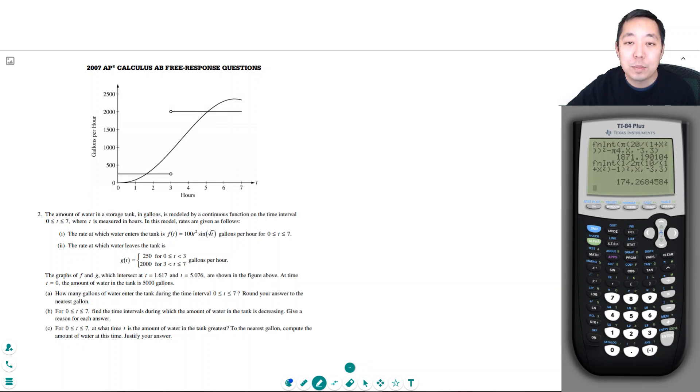Hey guys, this is Alan with Bothells STEM Coach and today we are continuing on with the AP Calculus 2007 free response question. So let's take a look. The amount of water in a storage tank in gallons is modeled by a continuous function of the time interval 0 ≤ t ≤ 7, which t is measured in hours.